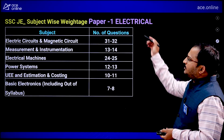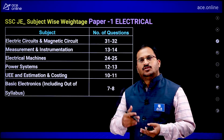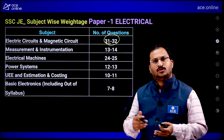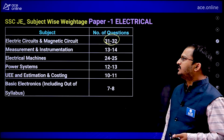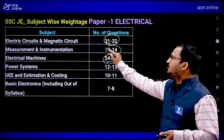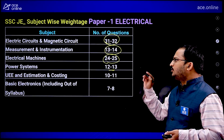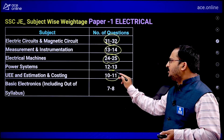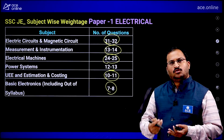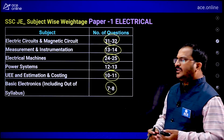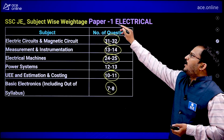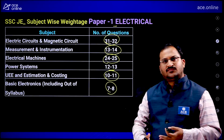For electrical engineering students, the subject-wise weightage is: Electrical Circuits and Magnetic Circuits — highest at 31 to 32 marks; Electrical Machines — 24 to 25 marks; Measurement and Instrumentation — 13 to 14 marks; Power Systems — 12 to 13 marks; Utilization — 10 to 11 marks; and Basic Electronics (considered out of syllabus) — 7 to 8 marks were asked in previous papers.